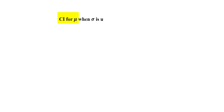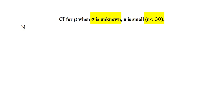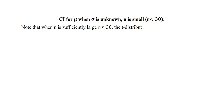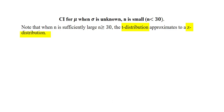Next, we construct a confidence interval for the population mean when sigma is unknown and n is small, where n is less than 30. We note that when n is sufficiently large — that is, n is greater than or equal to 30 — the T distribution will approximate to a Z distribution. Now we look at the next example.